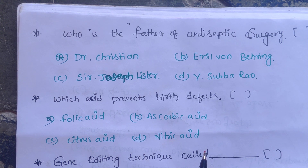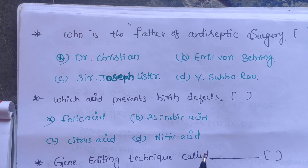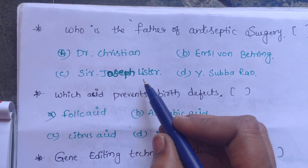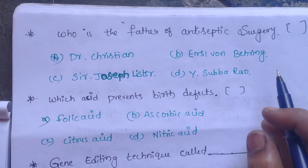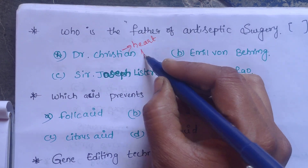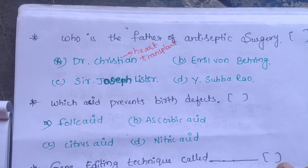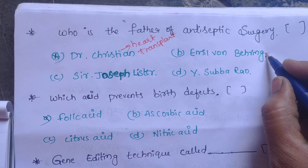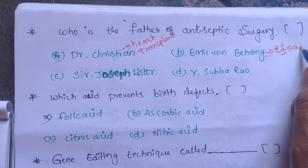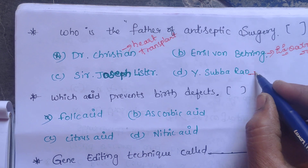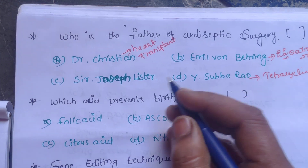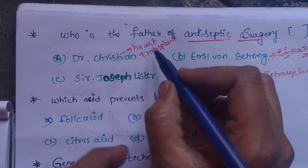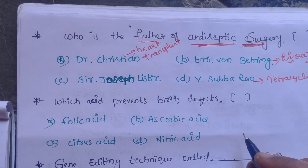The next question: who is the father of antiseptic surgery? Options: A. Dr. Christiaan Barnard, B. Emil von Behring, C. Sir Joseph Lister, D. Yellapragada Subbarow. Christiaan Barnard performed the first heart transplantation. Emil von Behring is associated with the diphtheria vaccine. Yellapragada Subbarow discovered tetracycline.